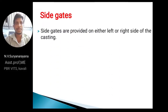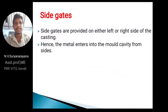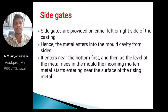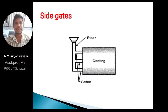Side gates are provided on either the left or right side of the casting, so the metal enters the mould cavity from the side. To observe the difference: top gate is at the cope section, bottom gate is at the drag section, and side gate is at either left or right. The metal enters near the bottom first, and as the level rises in the mould, the incoming molten metal starts entering near the surface of the rising metal.